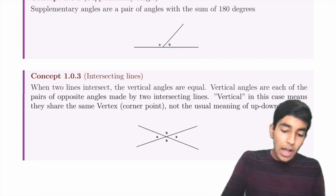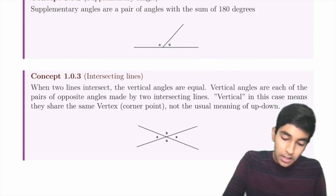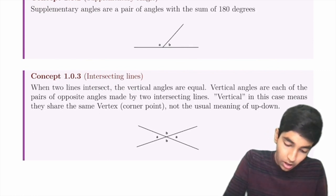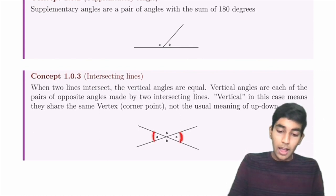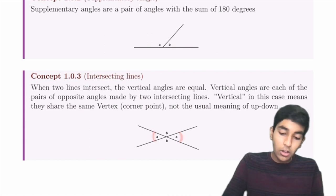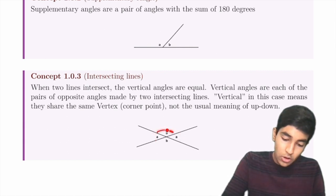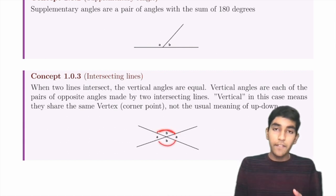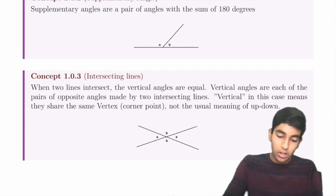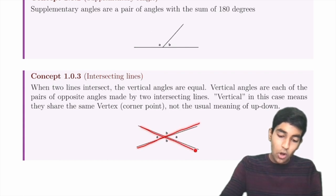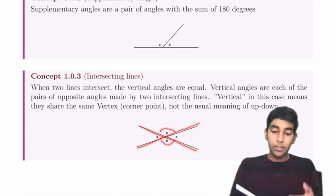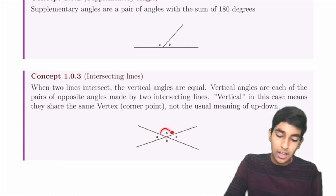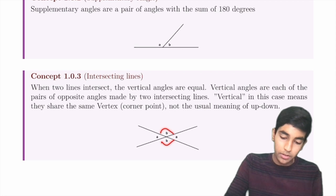When two lines intersect, vertical angles — which are basically these two angles — are equal. We also have that these two angles are equal because they're both vertical angles. So whenever you have intersecting lines, the opposite angles are equal.